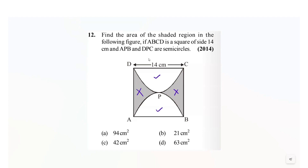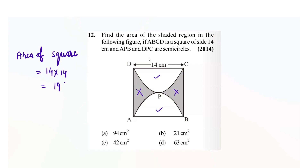So let's work with it. First of all, we will calculate the area of the square. Now since the side is already given, which is 14, so it would be 14 times 14, which is equals to 196 centimeter square.